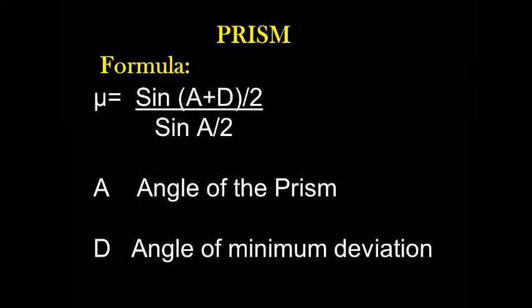Prism formula: the refractive index μ is equal to sin(A+D)/2 by sin(A/2), where A is the angle of prism, D is the angle of minimum deviation.